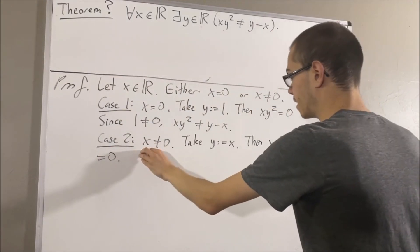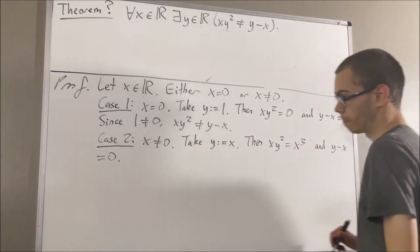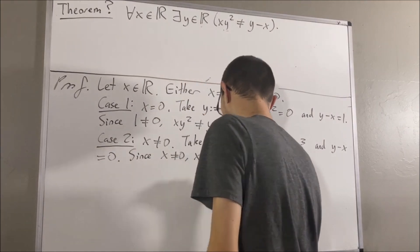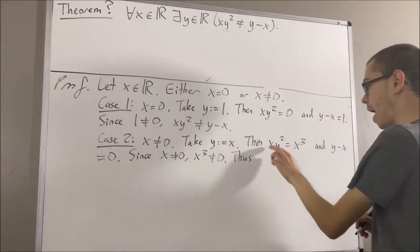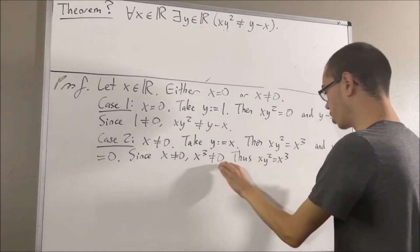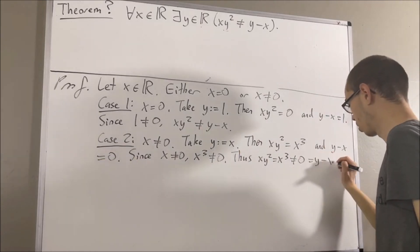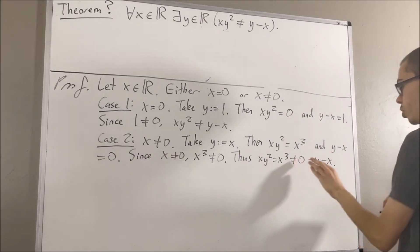Well, since x is not equal to zero, we have that x cubed is not equal to zero. And thus, xy squared is equal to x cubed, which is not equal to zero, which is equal to y minus x. So this is not equal to this.